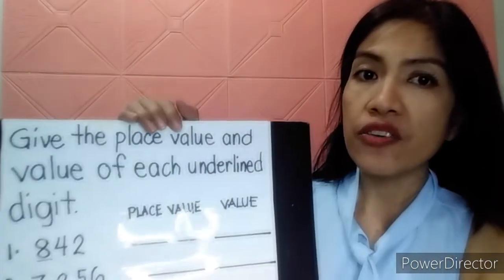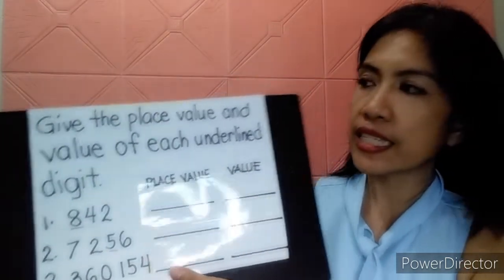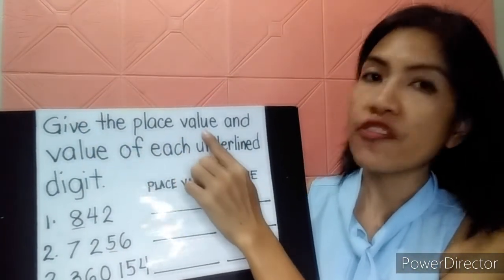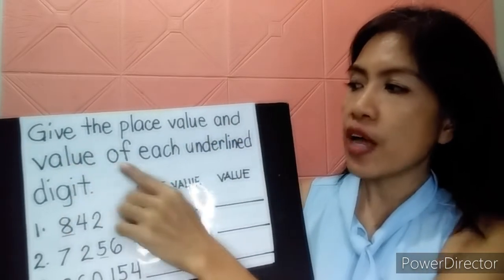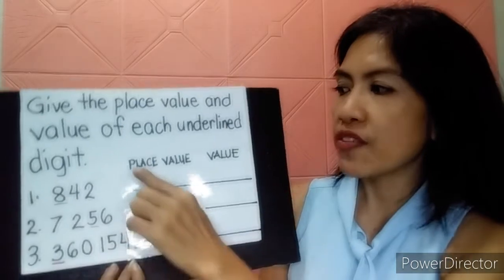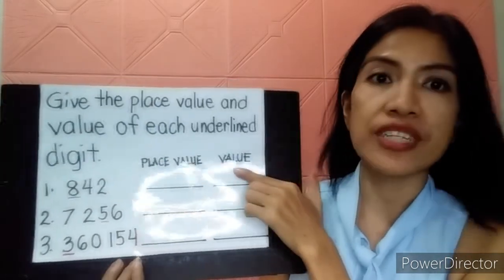I made it colorful so it's easier to retain in their minds when the image of what they're studying looks nice. So, if you are given this instruction: give the place value and the value of each underlined digit — you have there the place value and you have there the value.